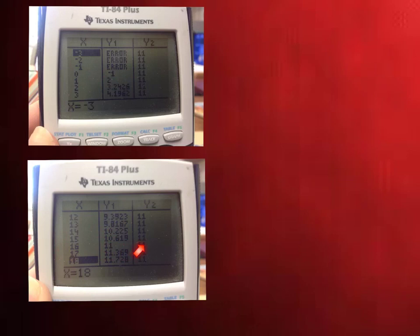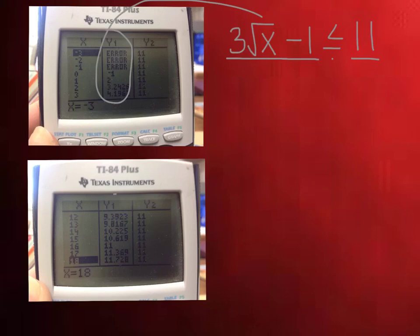And so since what we're looking for is where does 3 square root of x minus 1, where is that less than 11? That's what's in our y column. That's these things. Where is that less than 11? And that would be everywhere from here on up to here, right? Less than or equal to.